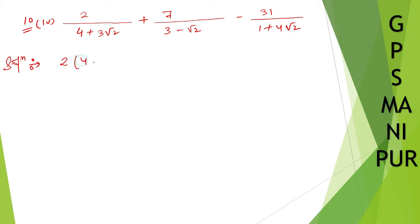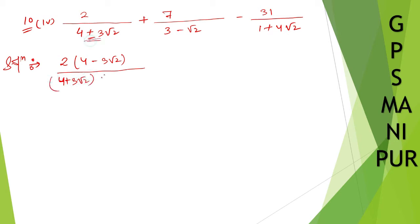For the first fraction, since the denominator has 4 plus 3 root 2, we take the conjugate 4 minus 3 root 2. We multiply both numerator and denominator by 4 minus 3 root 2.